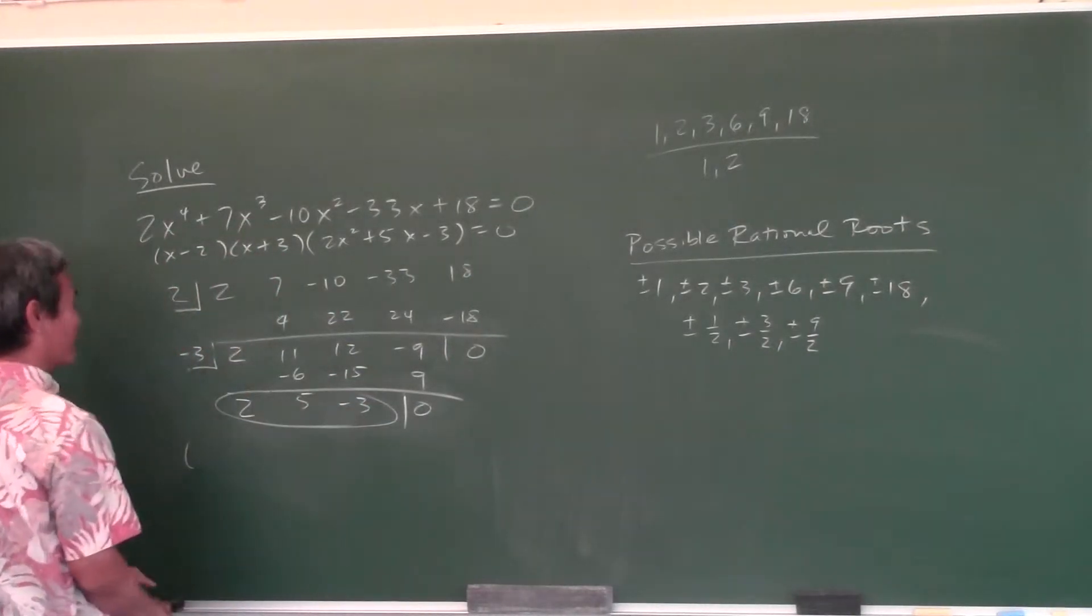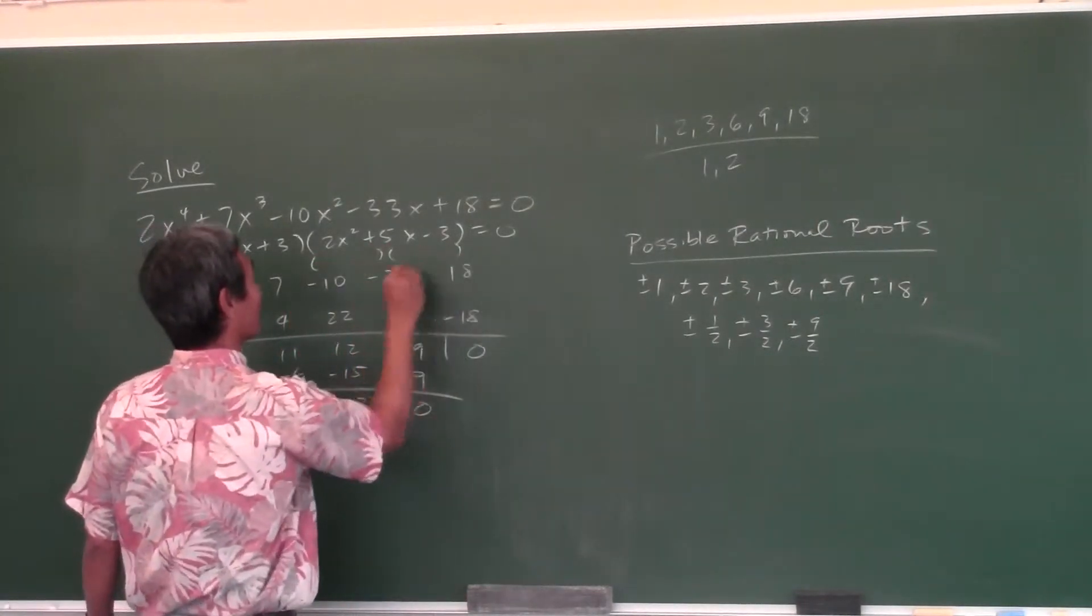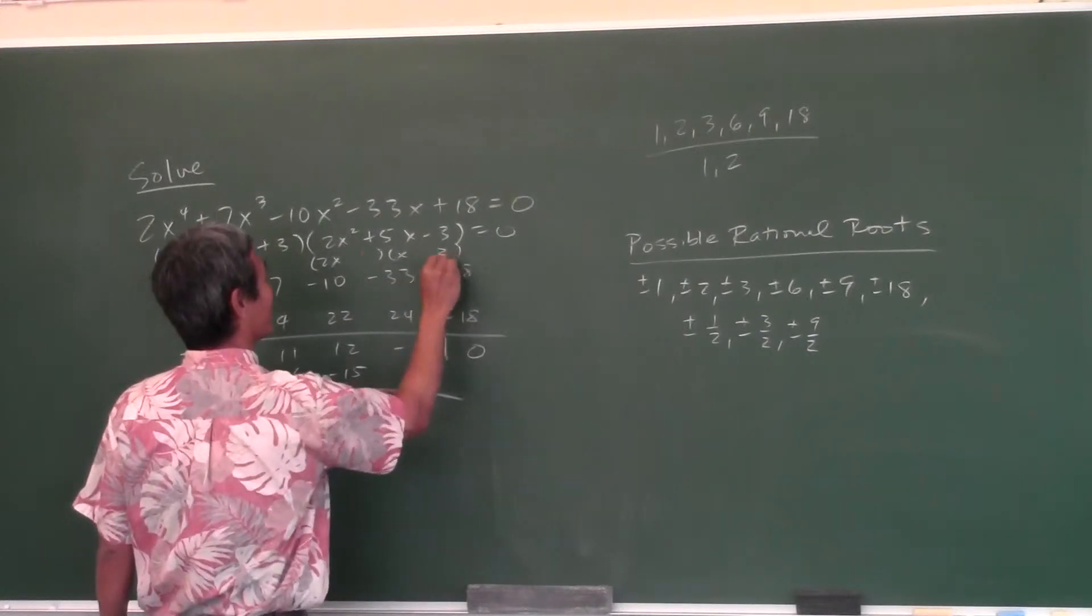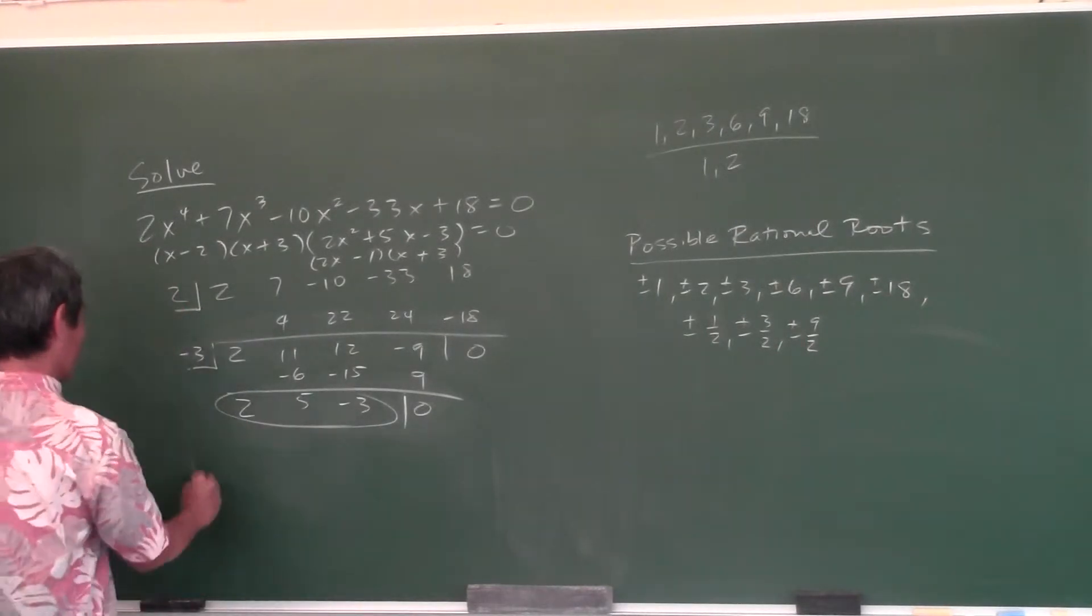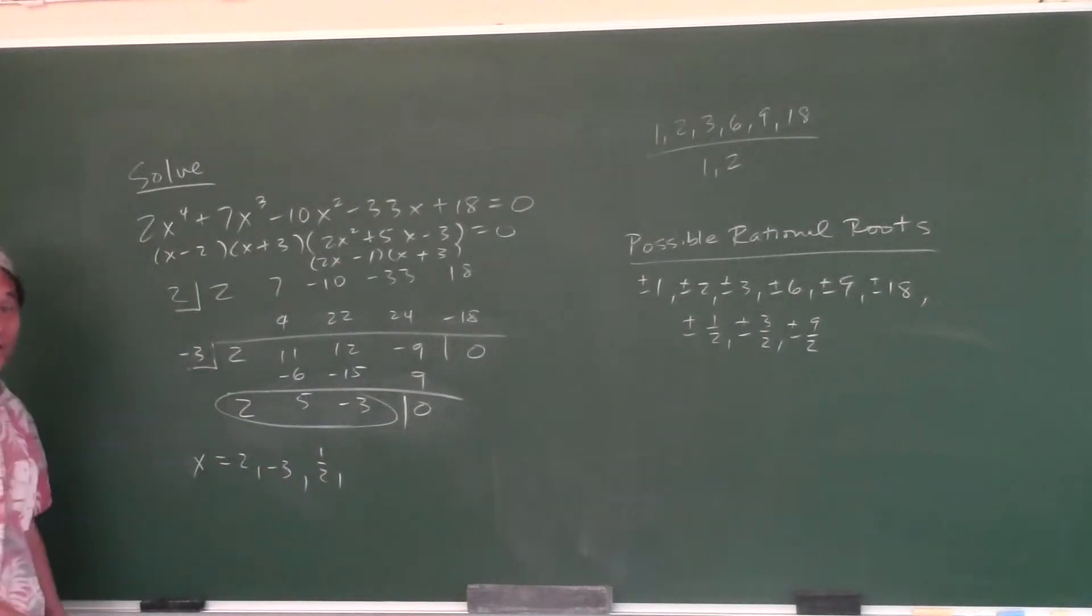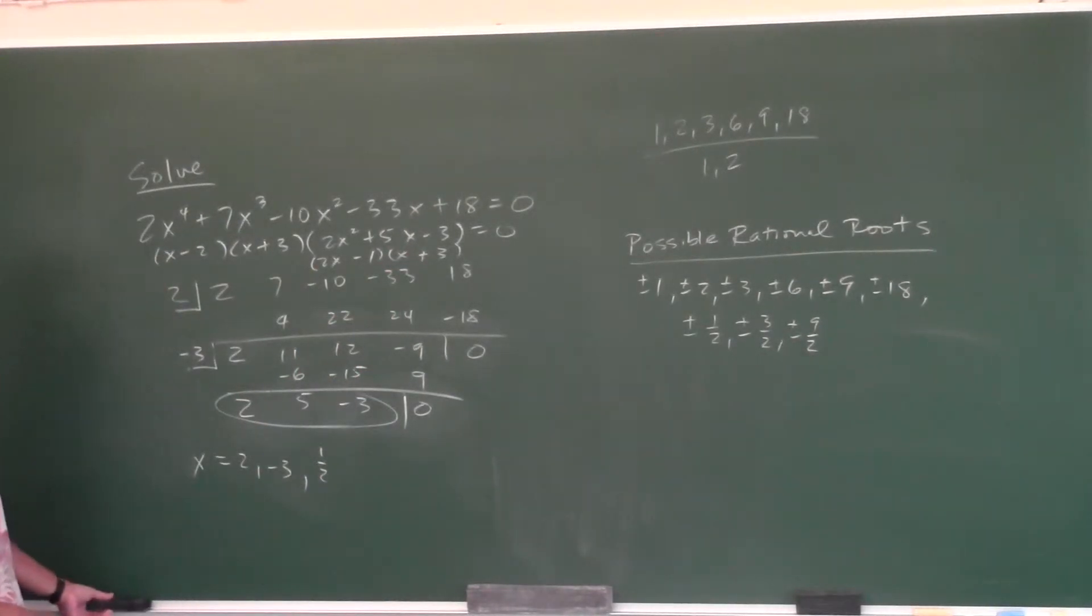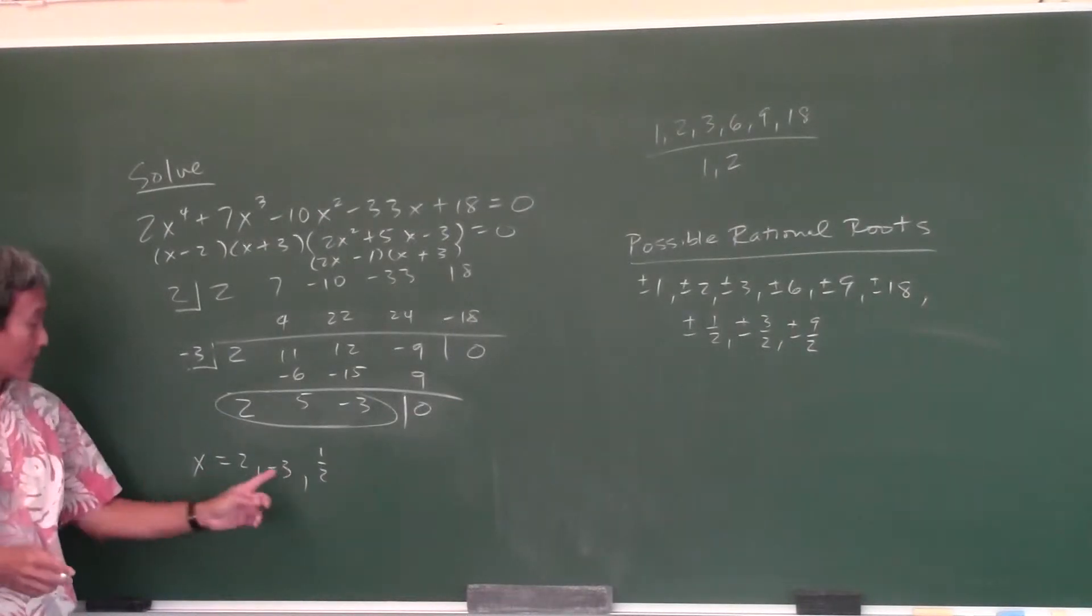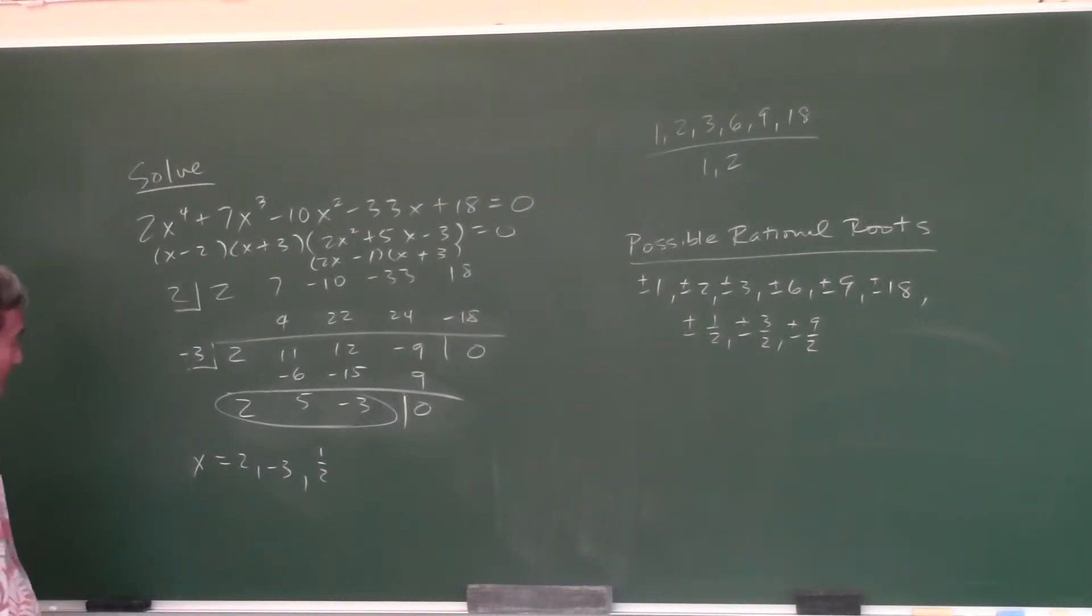And then what does this stand for? 2x squared plus 5x minus 3. That's a quadratic. Once you get it down to a quadratic, you're pretty much done already. So this stands for 2x squared plus 5x minus 3 equals 0. And once you get it down to a quadratic, you either factor it or use the quadratic formula. Does that factor? Yes. It does? Let's try it. 2x, x. 3 and 1. Plus and minus. Yes, it does. Live action! So what are your 4 roots? x equals 2, negative 3, one half. Negative 3. Oh! Negative 3 is a double root. Because look, x plus 3 is quantity squared. So you do have 4 roots now. It's just that negative 3 is a double root. Do we list it twice? No.